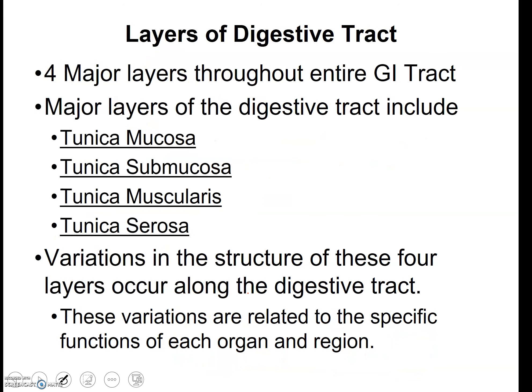The digestive tract itself is made out of several layers — the tunics. We saw this with blood vessels. Tunics are layers. We have the tunica mucosa, which makes mucus; the tunica submucosa, which is the base of the mucosa; the tunica muscularis, which contains smooth muscle; and the tunica serosa. You're going to have different thicknesses of each of these tunics along the length of the digestive tract, and those variations give you the different functions of each organ within the digestive tract.